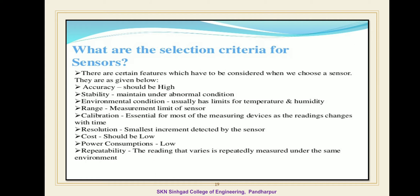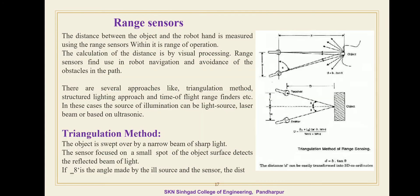So these are the different selection criteria for the ideal sensor. The next point is the range sensor. Range sensors are generally used to find out the distance between an object and the robot hand or end effector. The distance between the object and the robot hand is measured using a range sensor within its range of operation.